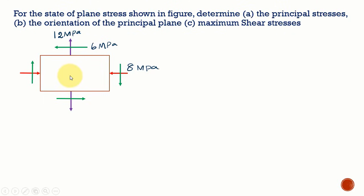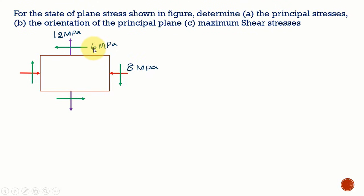This is the given element. We have two normal stresses: one is along the X-face, that is 8 MPa, and another one is along the Y-face, that is 12 MPa. The 12 MPa is tensile and the 8 MPa is compressive. We also have a shear stress of 6 MPa.